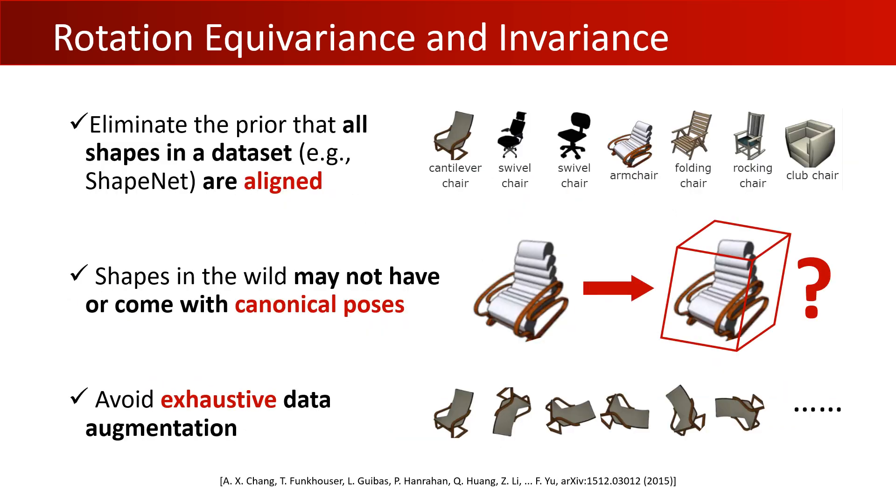In most existing 3D datasets, all shapes are aligned to a canonical pose, but shapes in the wild, like when you scan from a depth sensor, do not have such canonical poses. While data augmentation may alleviate this issue, the 3D rotation group SO3 is pretty large and such exhaustive augmentation can be resource consuming. Therefore, we're still looking for neural networks that are naturally equivariant to SO3 transformations.